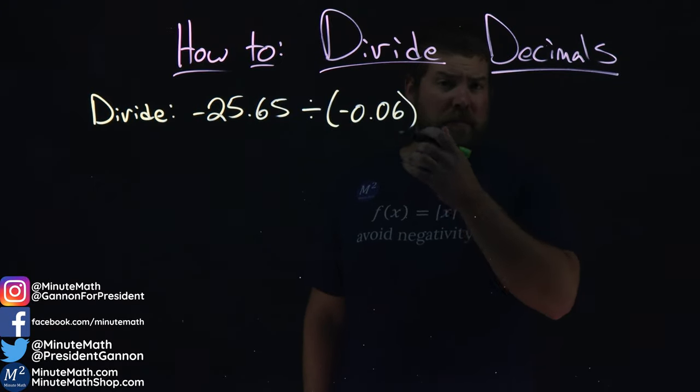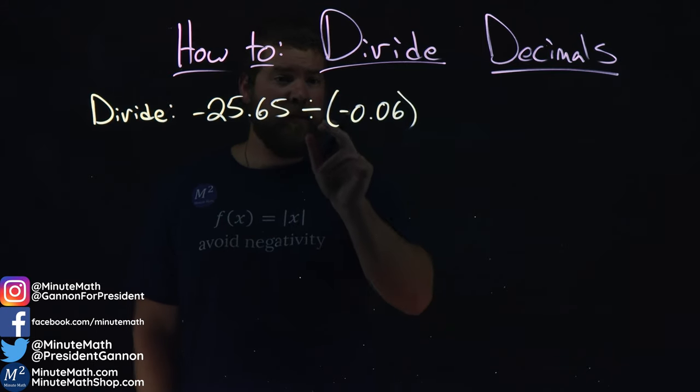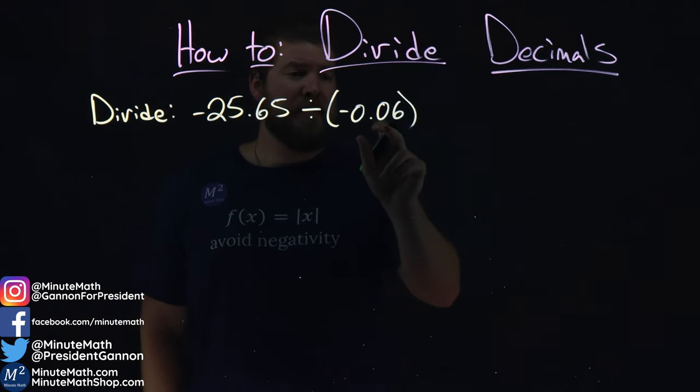We're given this problem here: divide negative 25.65 by negative 0.06.